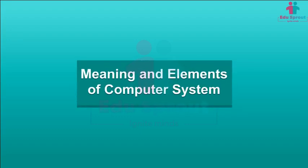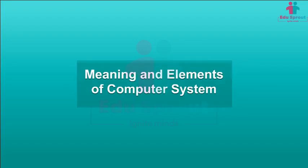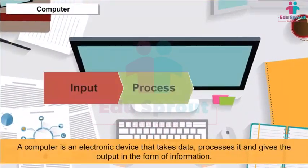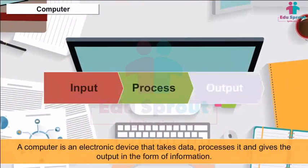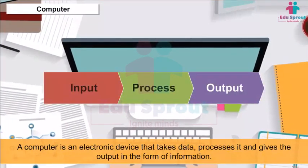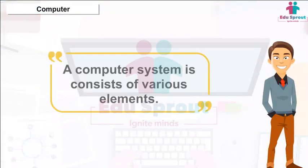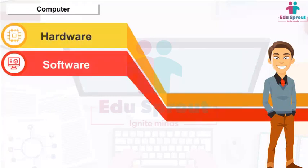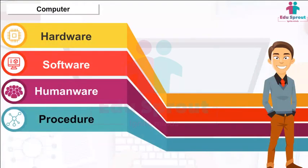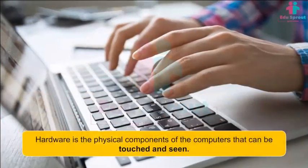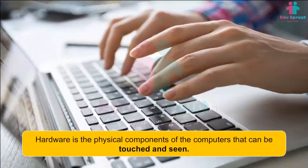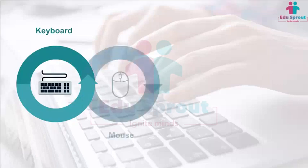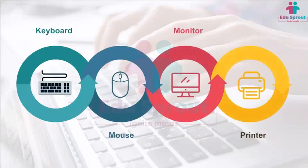Meaning and Elements of a Computer System: A computer is an electronic device that takes data, processes it, and gives the output in the form of information. A computer system consists of various elements: hardware, software, humanware, procedure, and data. Hardware is the physical component of the computer that can be touched and seen — for example, keyboard, mouse, monitor, printer, etc.